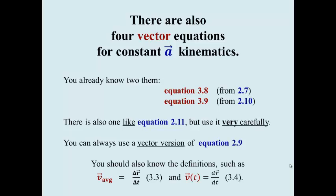And, of course, you should know the definitions. What you should notice is that there's a fairly compact representation that when you write something like v average equals delta r vector over delta t, you're writing down three equations, one for x, one for y, and one for z.